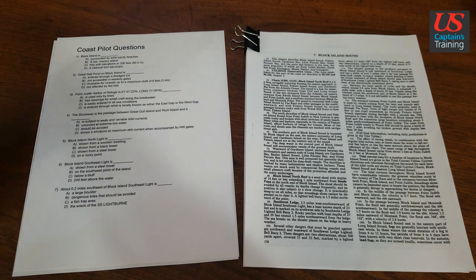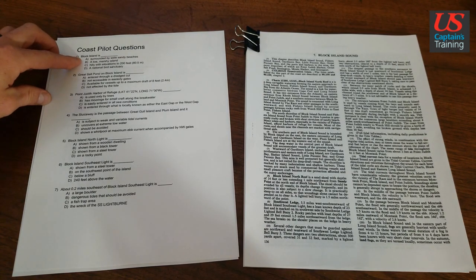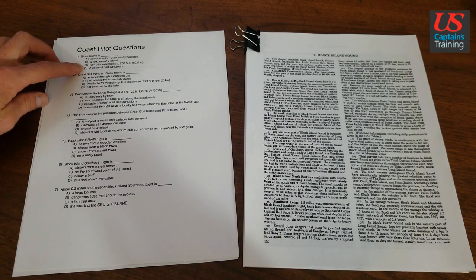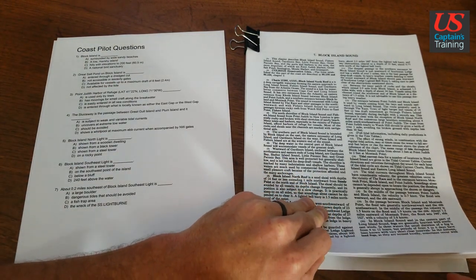Coast Pilot Question 1: Block Island is A. Surrounded by wide sandy beaches, B. A low marshy island, C. Hilly with elevations to 200 feet, or D. A national bird sanctuary. So we will go to the index of the Coast Pilot.